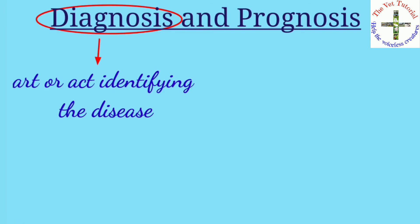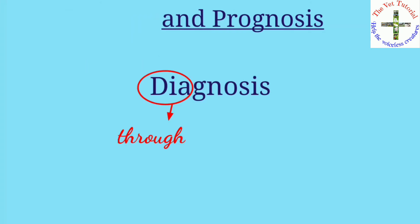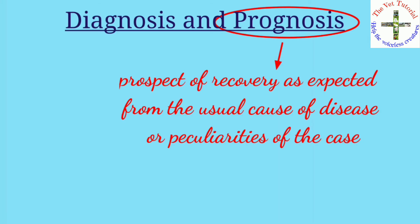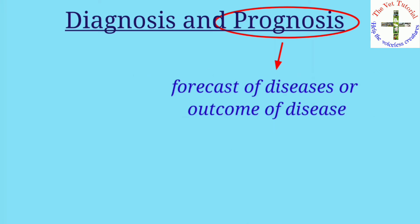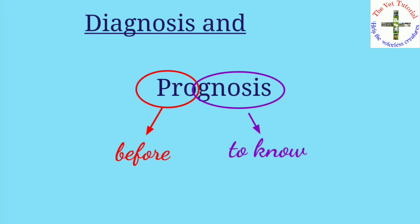Diagnosis is the art or act of identifying a disease with the help of signs and symptoms and through various laboratory tests, clinical samples, and post-mortem examination. It is a Greek word: 'dia' means through and 'gnosis' means to know. Prognosis is the prospect of recovery as expected from the usual course of a disease — simply put, it is the forecast or outcome of the disease. 'Pro' means before and 'gnos' means to know.